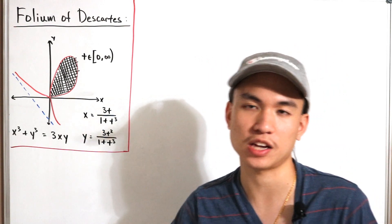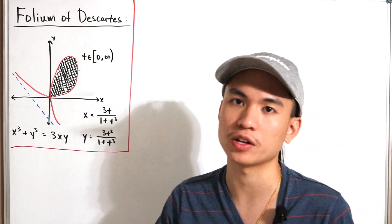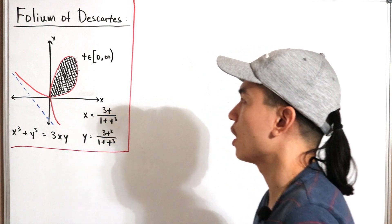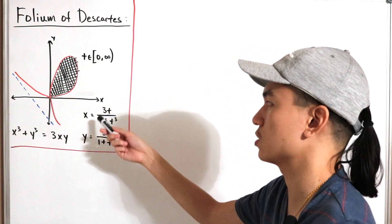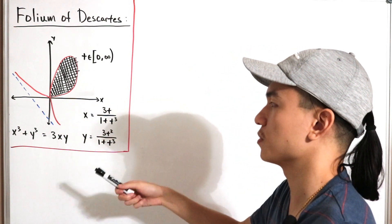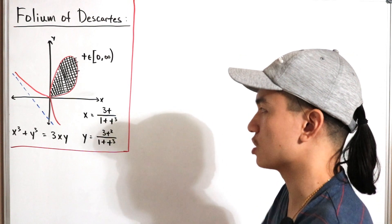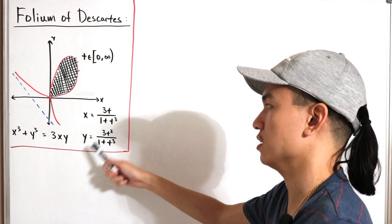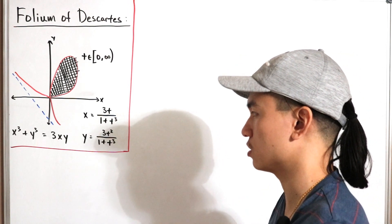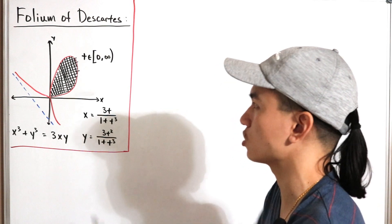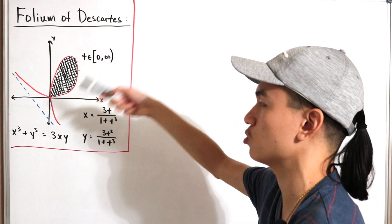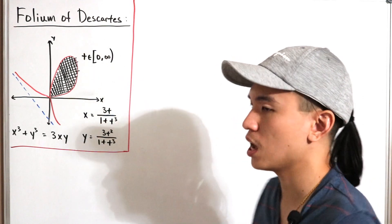With a = 1, the asymptote is defined accordingly. We also have the parameterization: x = 3t / (1 + t³) and y = 3t² / (1 + t³), where t ranges from 0 to infinity.